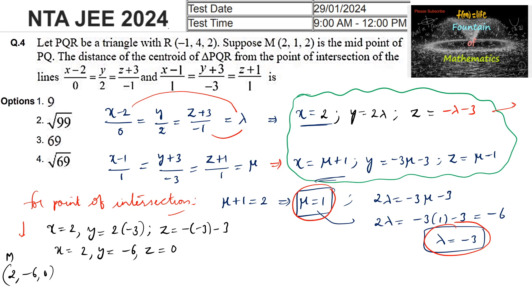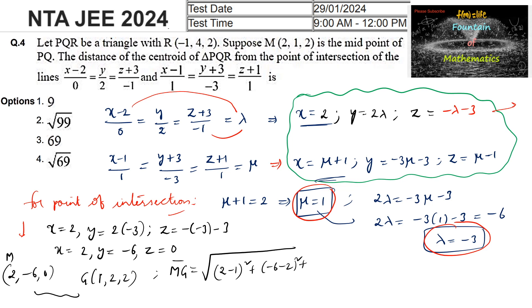Now we find the distance from the centroid G = (1, 2, 2) to the point of intersection (2, −6, 0). Using the distance formula: distance = √[(2−1)² + (−6−2)² + (0−2)²] = √[1 + 64 + 4] = √69.